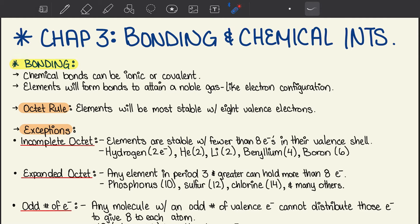Chemical bonds can be ionic or covalent. Elements will form bonds to attain a noble gas-like electron configuration, and they follow the octet rules, where elements will be most stable with 8 valence electrons. But there are some exceptions to these rules.